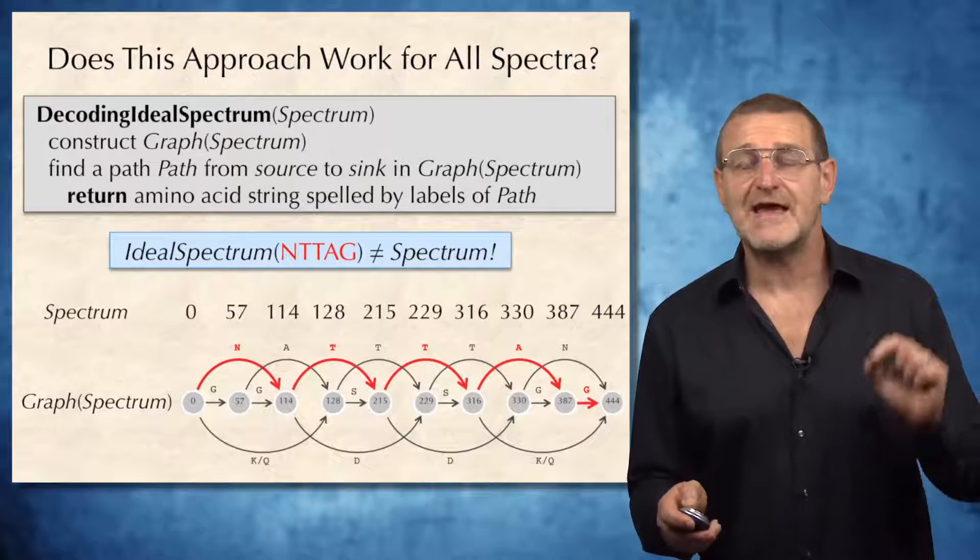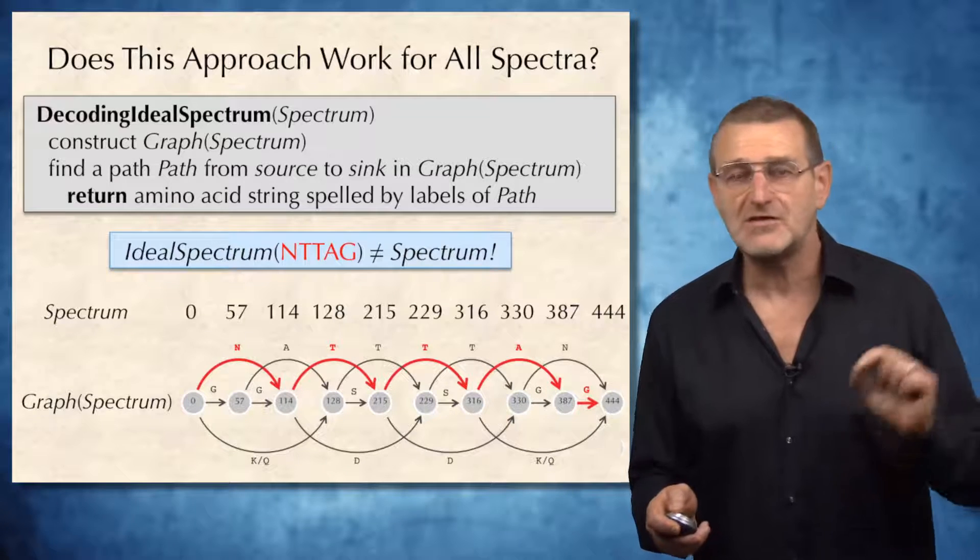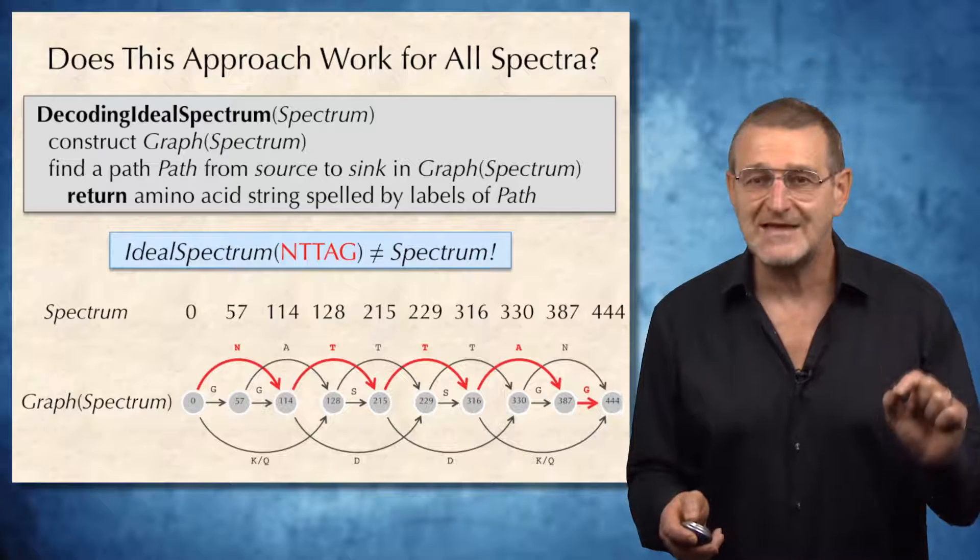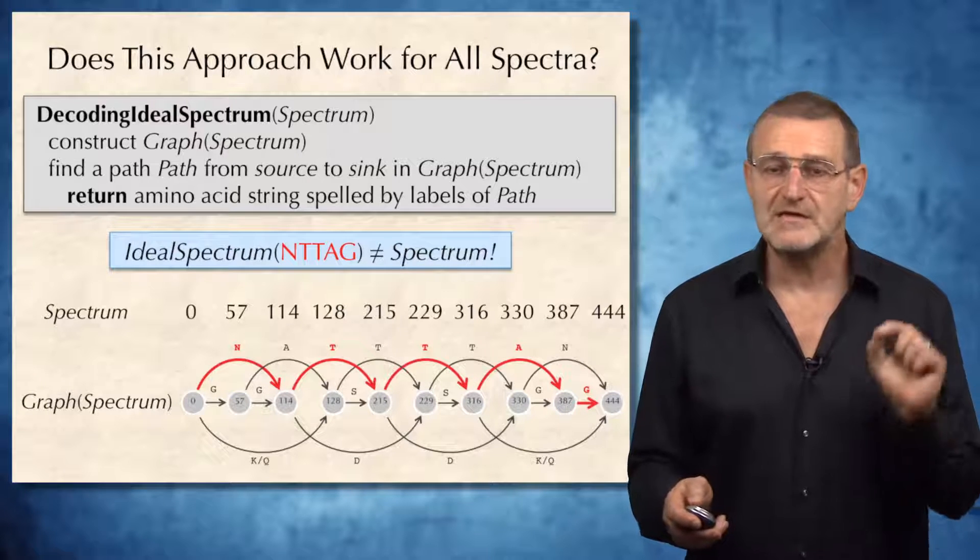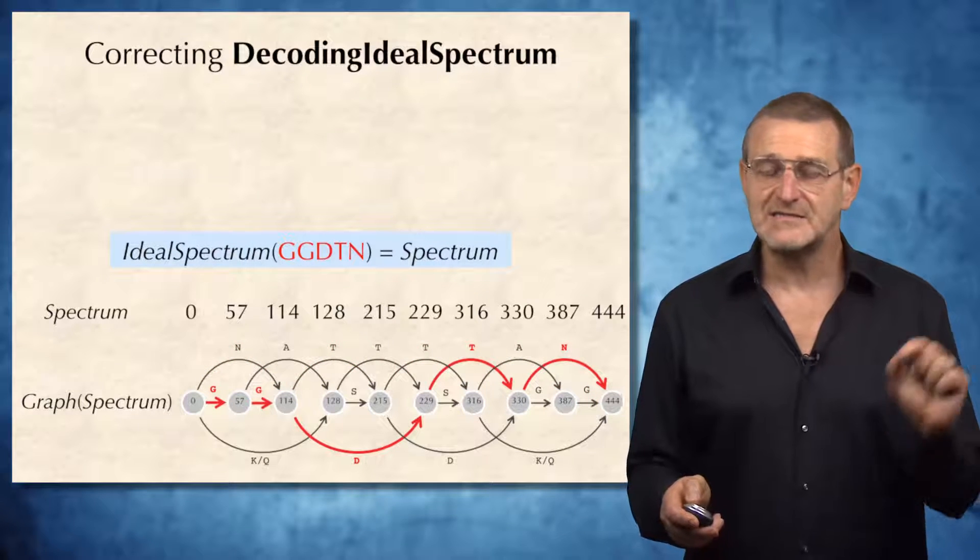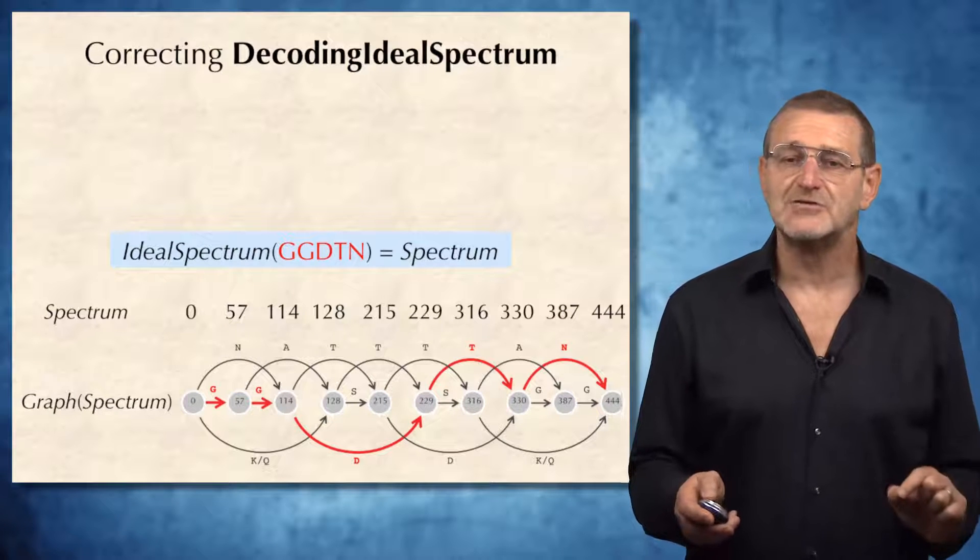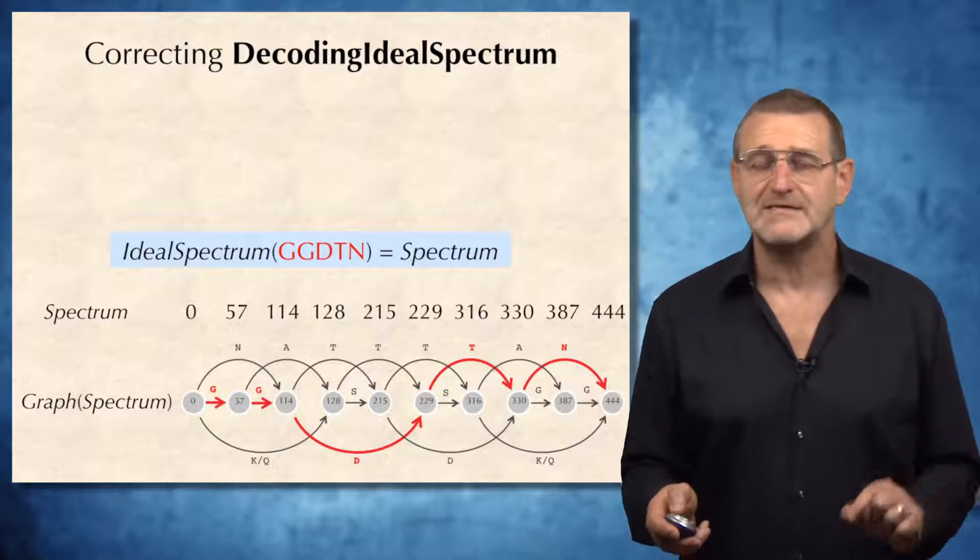But if we take the ideal spectrum of NTTAG, it will turn out that it is not equal to the original spectrum. Which means that we are doing something wrong. Of course, in this graph, there is a path that spells the correct solution of the problem. But we don't know how to find it.